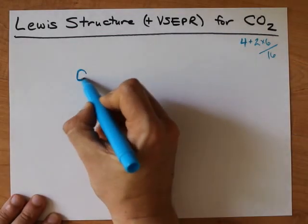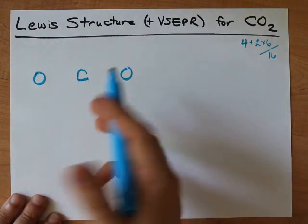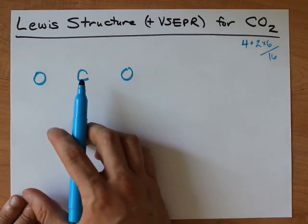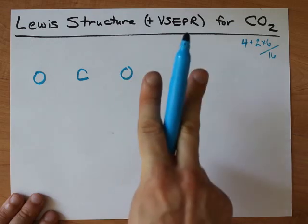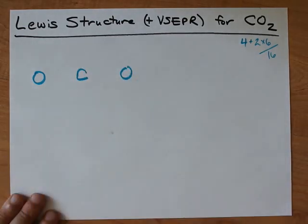I like putting my central atom in the center and my outer atoms on the outside. Carbon has a lower electronegativity. Lower electronegativity atoms generally go in the center, and in addition, carbon likes to have four bonds. Oxygen likes having two. I like the atom that has the higher bonding capacity in the center as well.